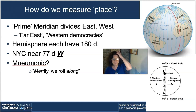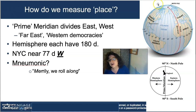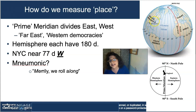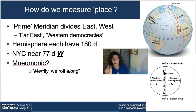Looking at the western hemisphere's 180 degrees: 10 degrees west, 20, 30, 40 — and New York is at about 77 degrees west on the globe. So we're getting more precise here with our locations and places.